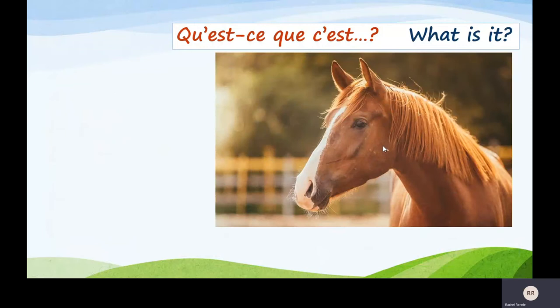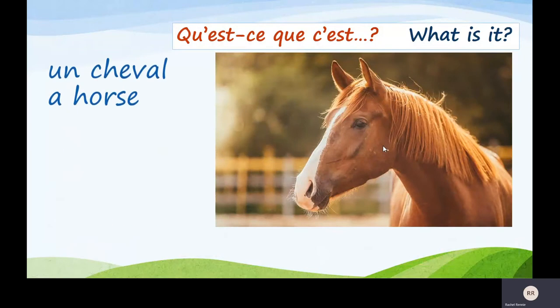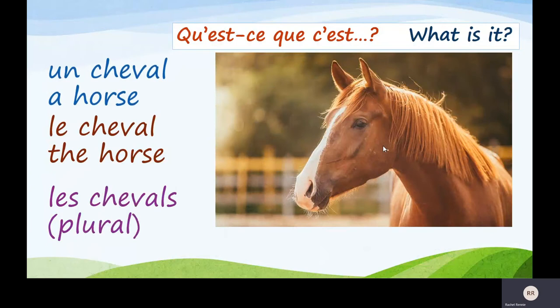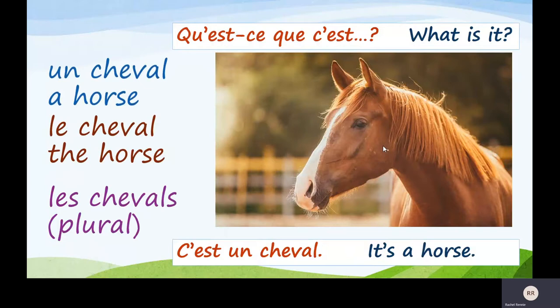A cheval — it's a horse. Un cheval. The horse is le cheval. Les chevaux is the plural. Répétez: un cheval, le cheval, les chevaux. I've got it right this time — woohoo! Qu'est-ce que c'est? What is it? C'est un cheval. It's a horse.